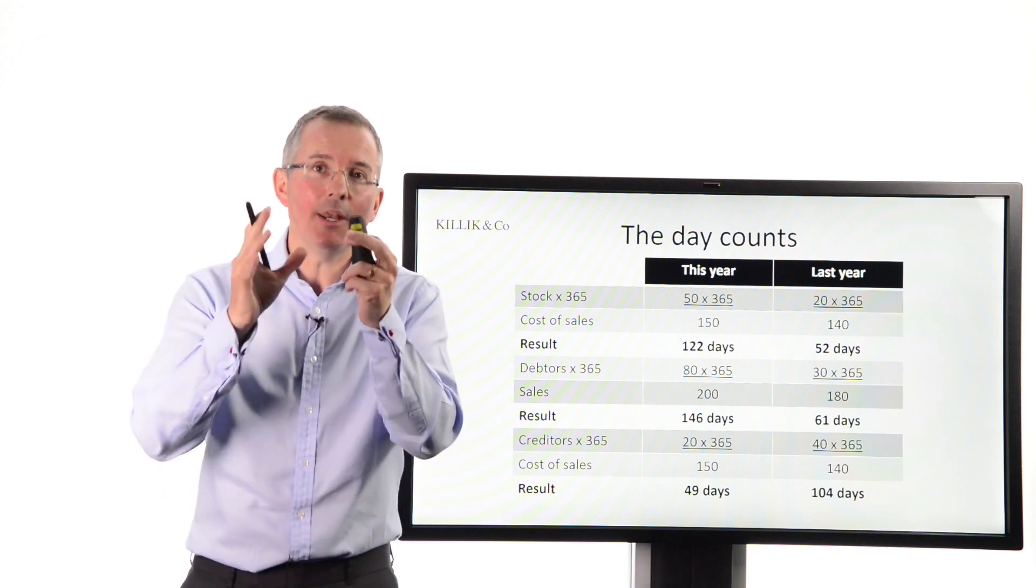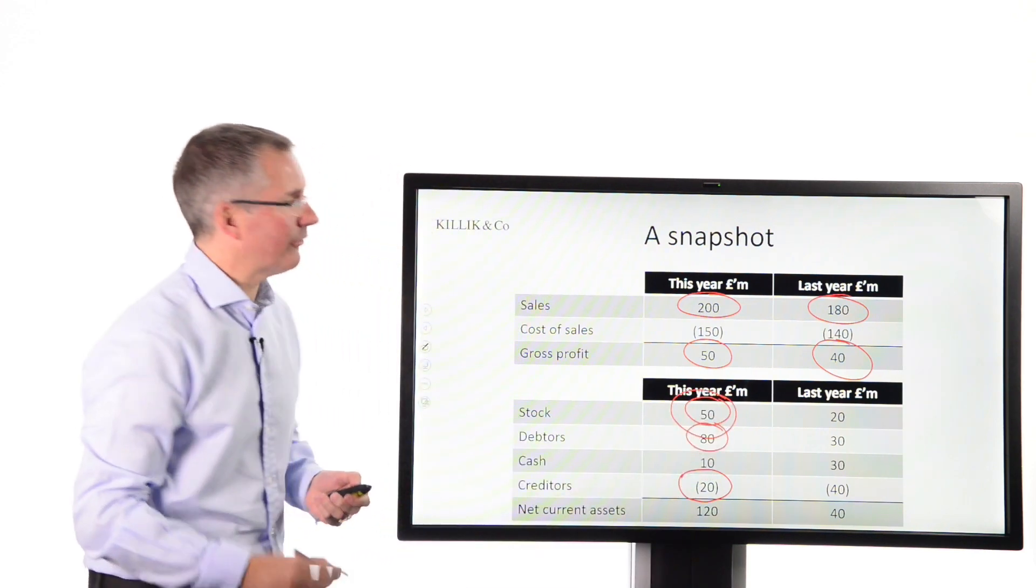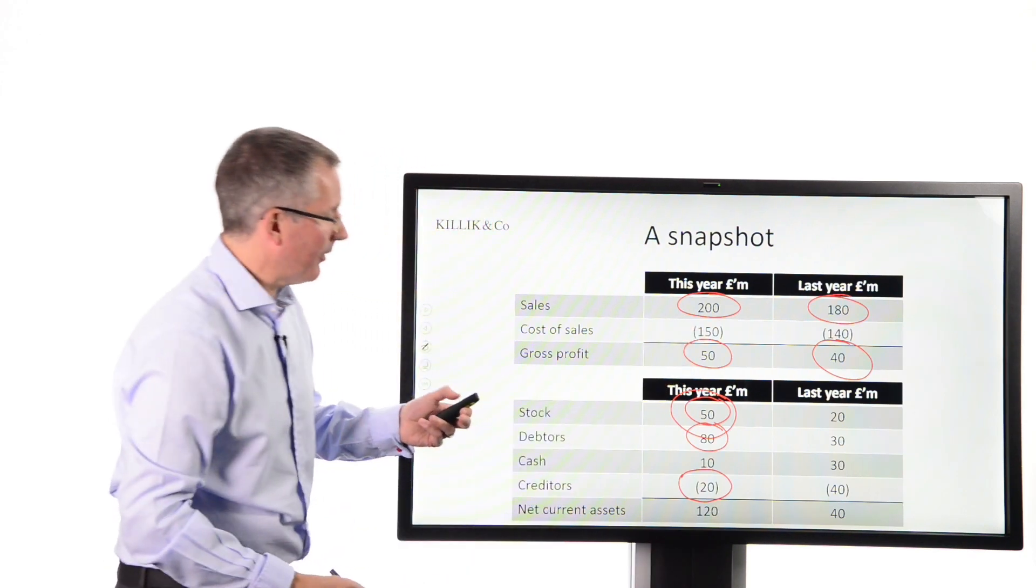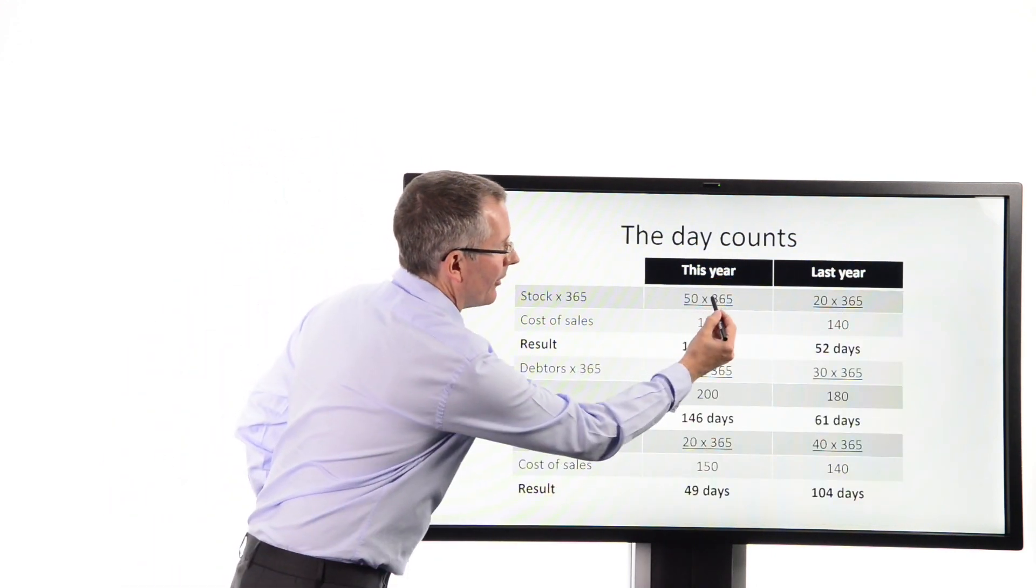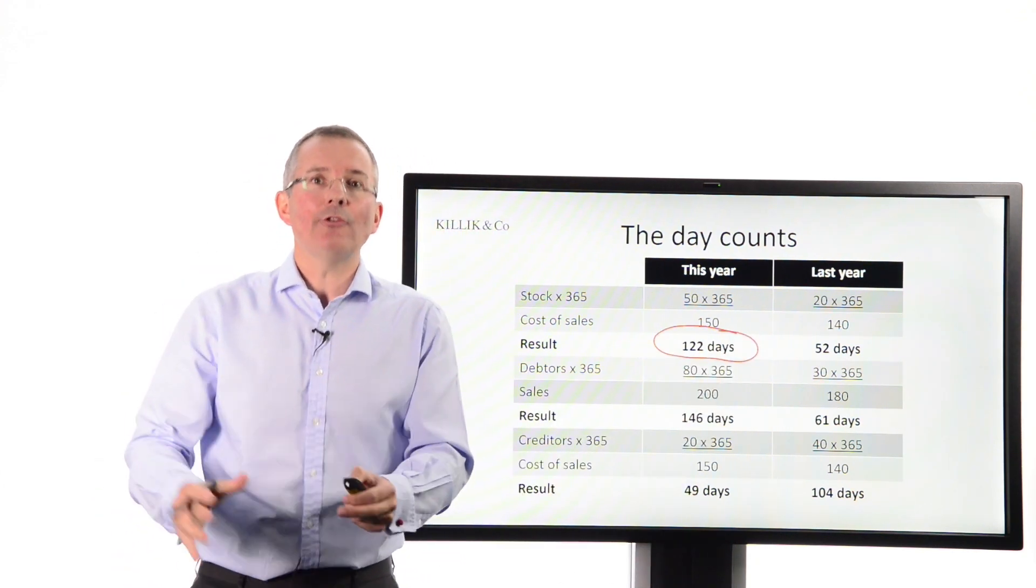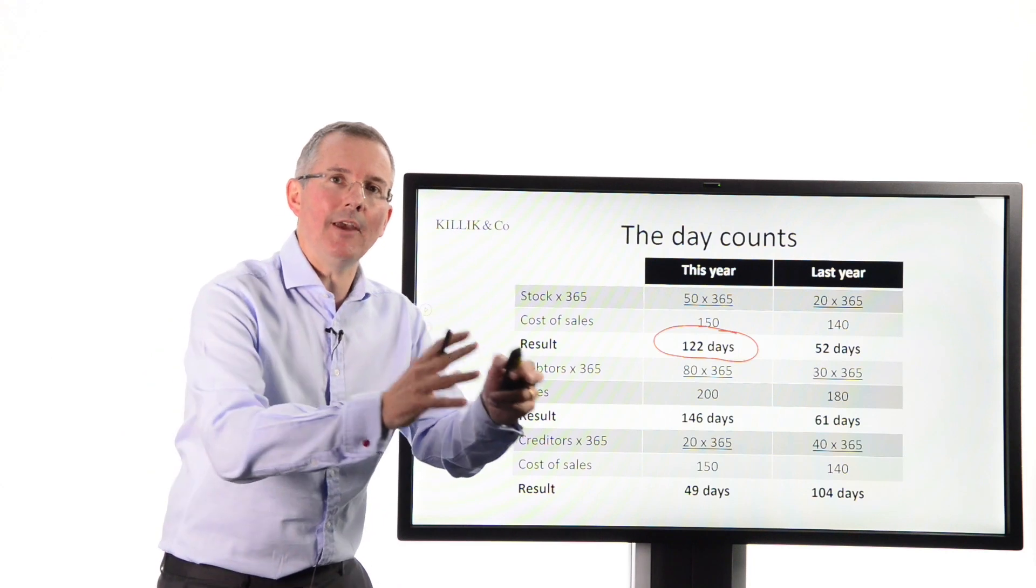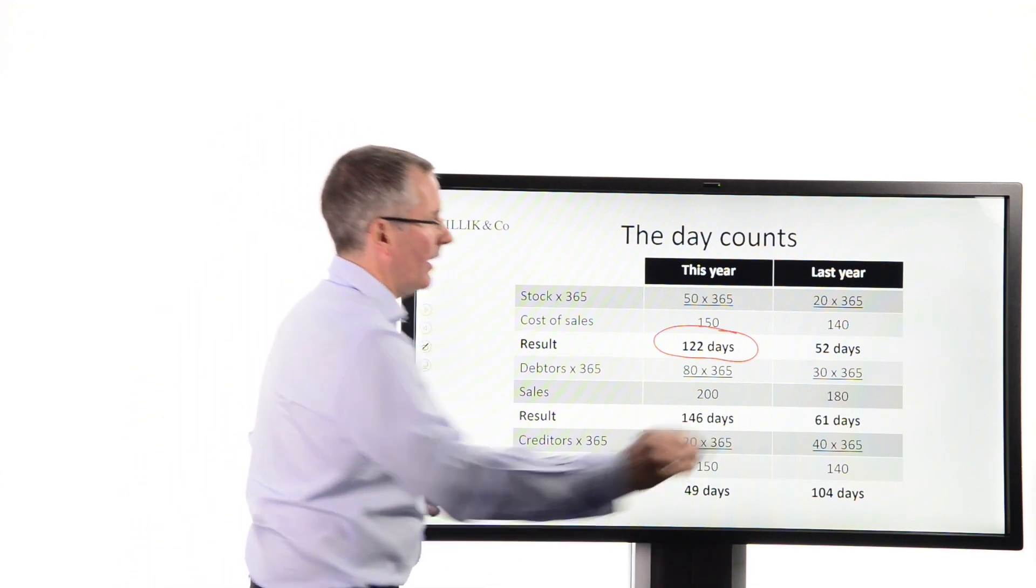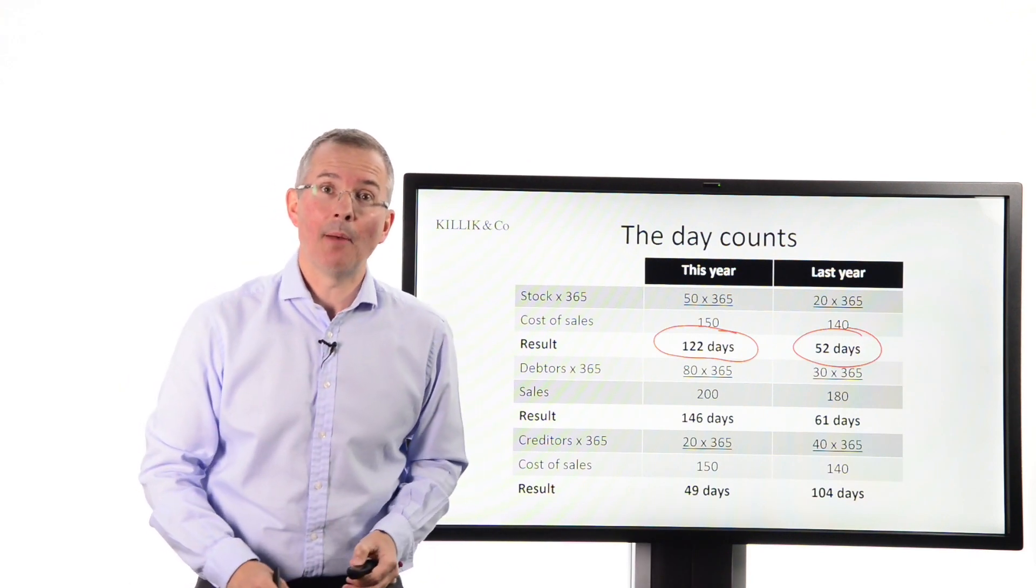What I'm doing is taking, look what I've done here, taking the stock figure from the balance sheet. There it is, the closing stock figure. Okay, this isn't the only way you can do this, but it's my way. Comparing it to the figure at the top, the cost of sales, and expressing that as number of days. Why? Because 50 times 365 over 150 is 122 days. What does that tell me? It tells me that, on average, it takes 122 days to turn stock around. So, the gap between stock arriving, on average, it's a snapshot, and stock leaving our company is 122 days. Quite a long time, several months. Last year, it was only 52. We were turning around stock much more quickly. Same calculation, last year's numbers.